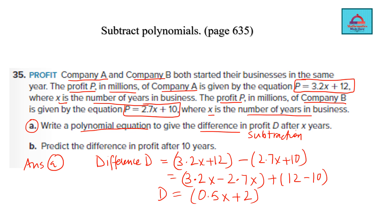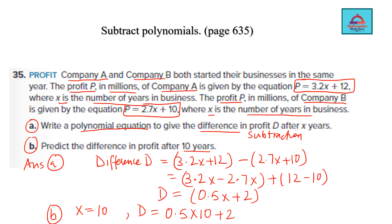X is denoting the number of years in business. In part B you have to predict the difference after 10 years. So plug in x equals 10 into D equals 0.5x plus 2. It will be 0.5 times 10 plus 2, which equals 5 plus 2, equal to 7 million. That completes this question.